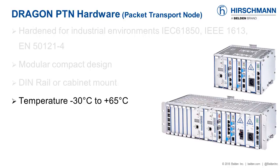Industrial environments are often subject to extreme temperatures, especially if outdoor operation is required. The Dragon PTN supports a temperature range of minus 30 degrees Celsius up to plus 65 degrees Celsius, making it an ideal choice for almost any environment.